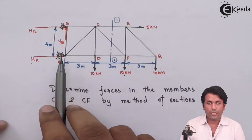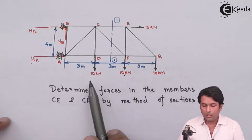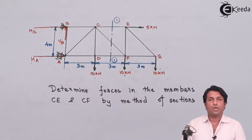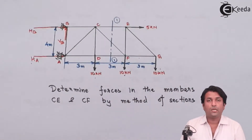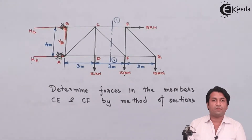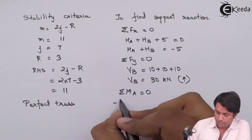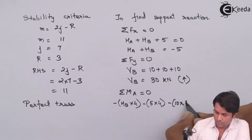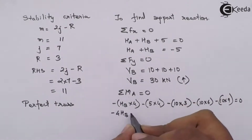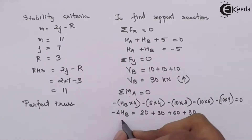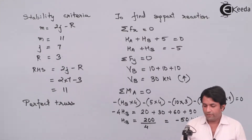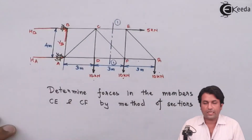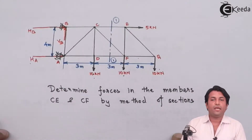Taking moment about A: all the 10 kN forces are creating a clockwise moment, so that will be negative. The 5 kN force is also creating a clockwise moment — another negative sign. The reaction force HB is also creating a clockwise moment, so that will be negative as well. From the result, my assumption of HB acting towards the right is wrong — I need to make it act towards the left.